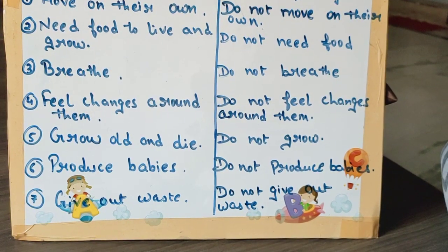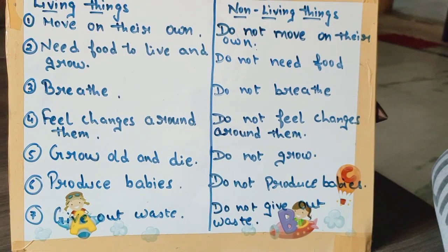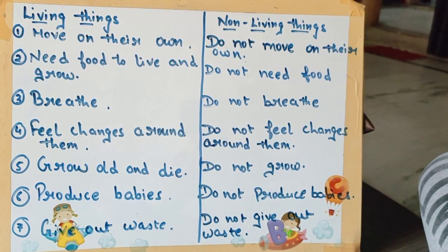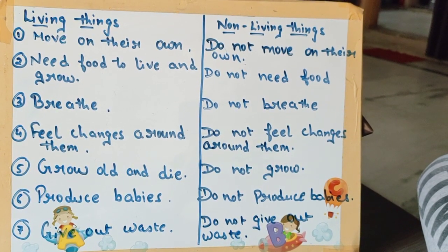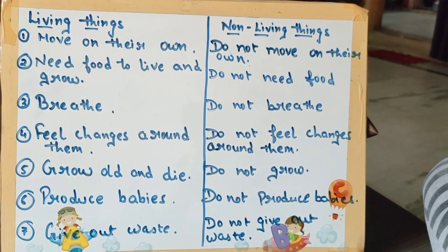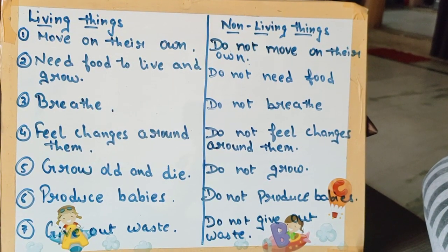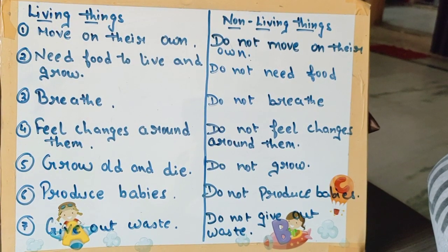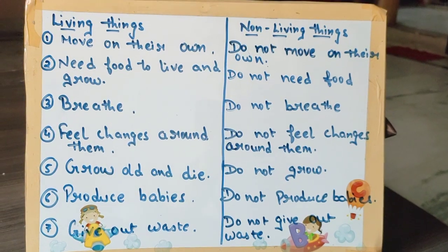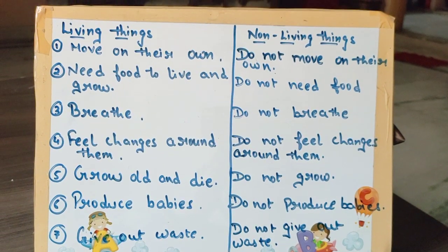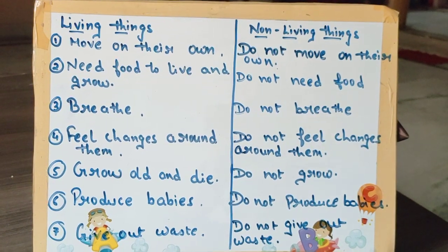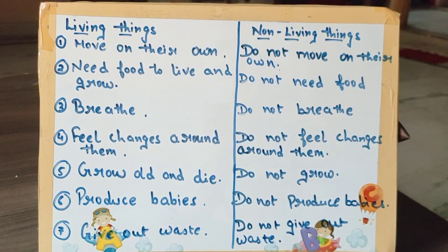Last point: living things give out waste. Whatever we eat or drink, the waste materials go out of our body because they are harmful for us. But non-living things do not give out waste. So these are the differences between living things and non-living things. I hope the points are clear to you. Thank you.